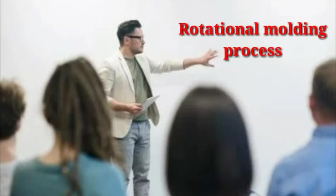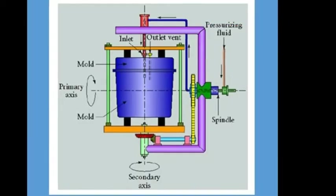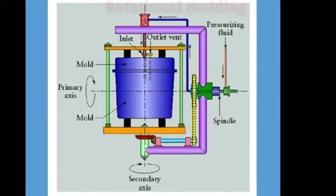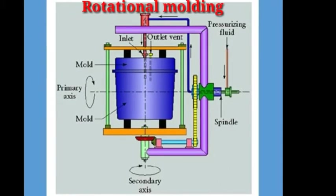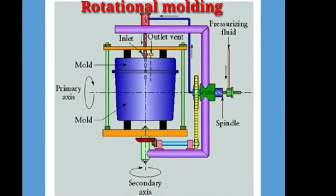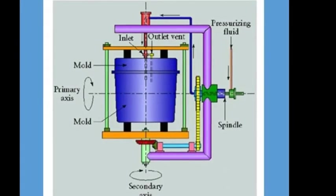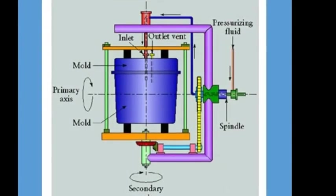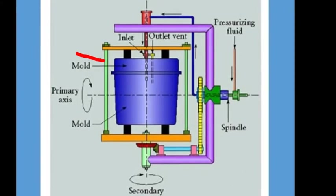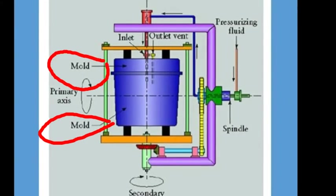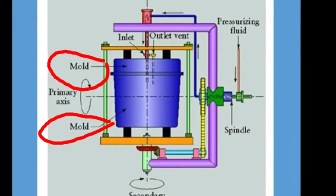Now we are going to see the rotational molding process. In a rotational molding process, you can see in the image on the screen, a predetermined amount of polymer powder is loaded in the mold. The mold is heated while rotating on two perpendicular axes.